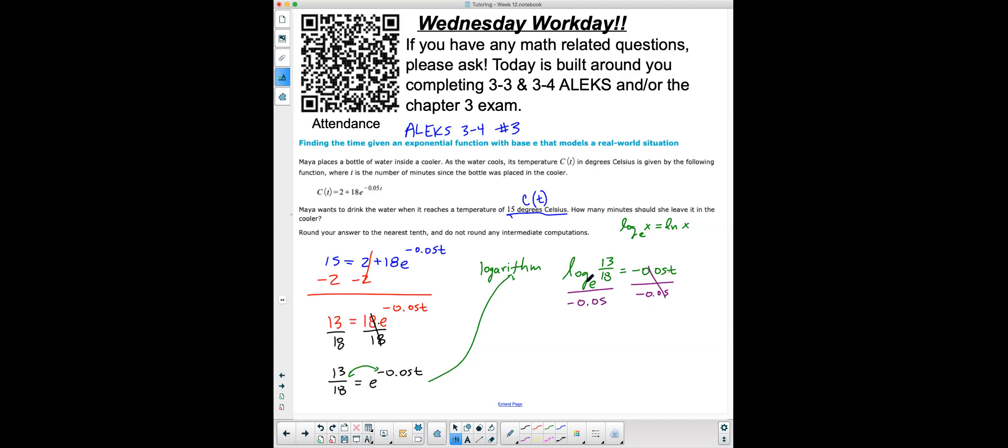So one more time, when I rewrite this, I'm not going to write log with a base of E, I'm just going to write natural log. So it's natural log of 13 over 18, I'll put that in parentheses, all over negative 0.05. So this should be my answer right there. And so we're going to go graph this.